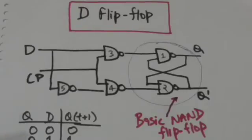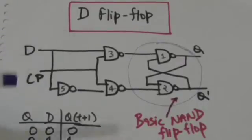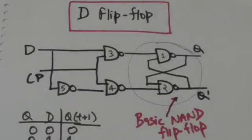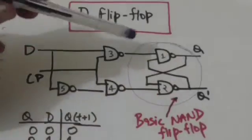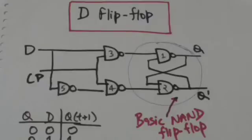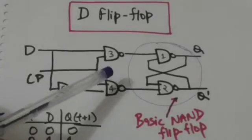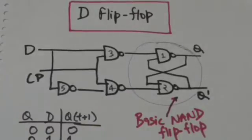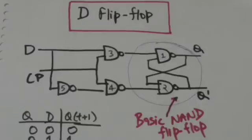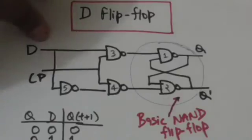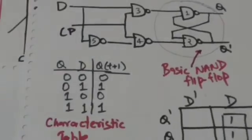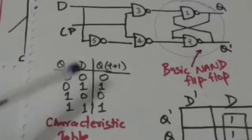During the occurrence of clock pulse, when CP equals one and D equals one, the output of gate three is zero and the output of gate four will be one. As we have already studied in the basic NAND flip-flop, when the input of gate one is zero and the input of gate two is one, the flip-flop switches to set state.